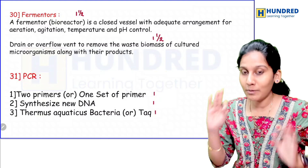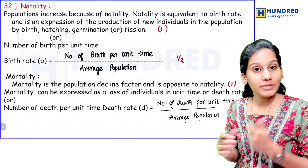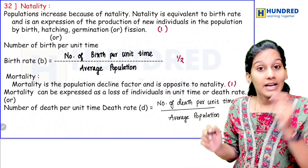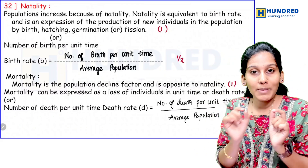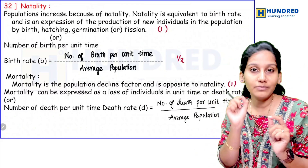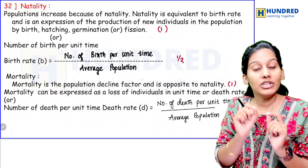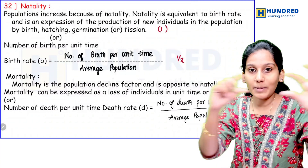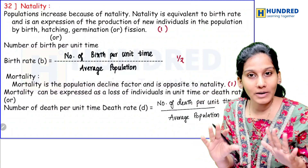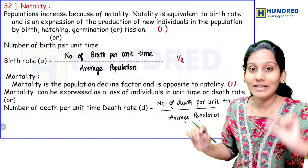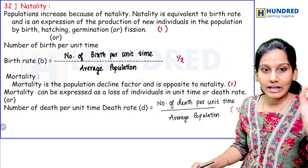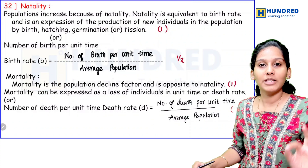Natality and mortality — definitively you will need the formula. There are half marks for the formula. You will have the definition and the formula. If you have the formula, there are half marks. You can see two parts clearly.